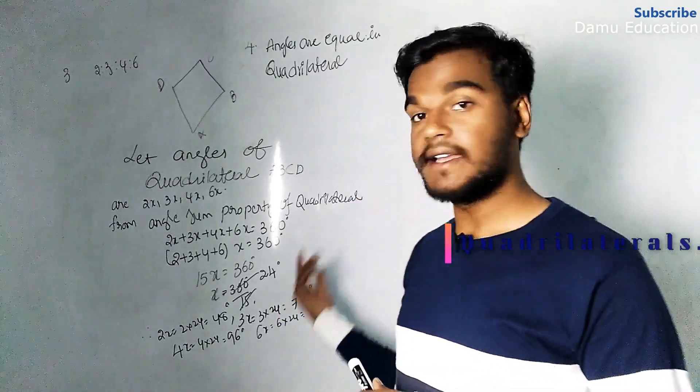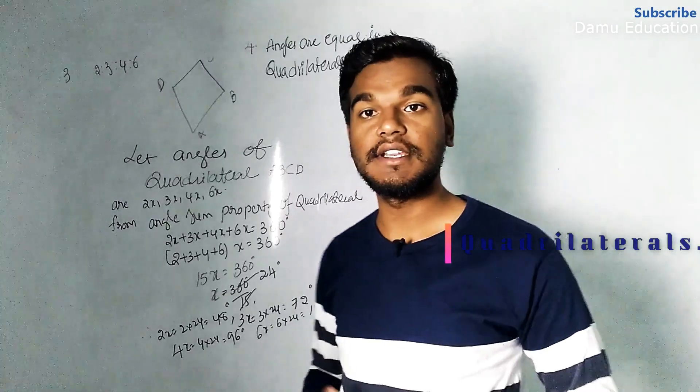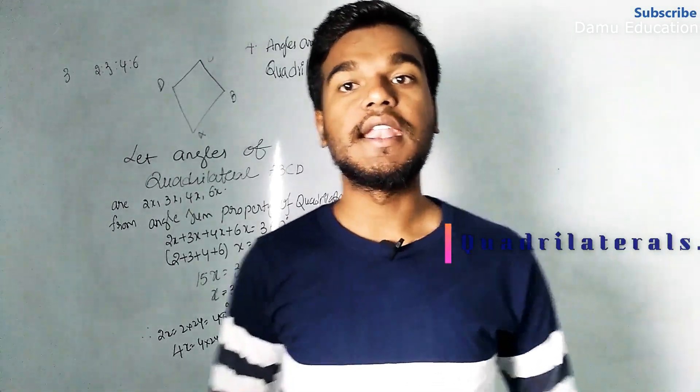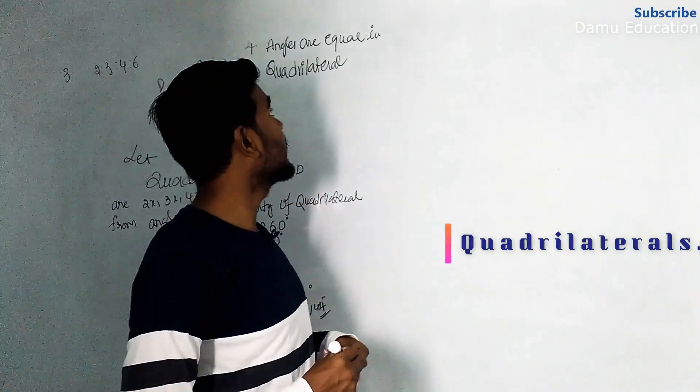So the four angles of the quadrilateral are 48 degrees, 72 degrees, 96 degrees, and 144 degrees. Now let's move to the fourth question.